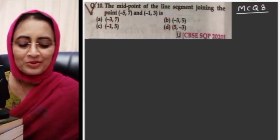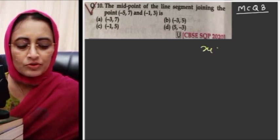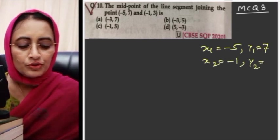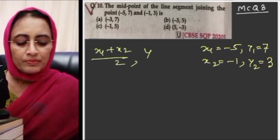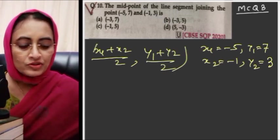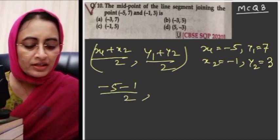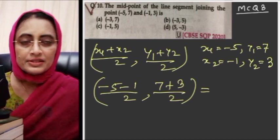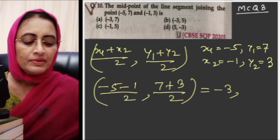MCQ number 3: The midpoint of the line segment joining the given points — this is very easy. Midpoint means add the x-coordinates and divide by 2, add the y-coordinates and divide by 2. x1=minus 5, y1=7, x2=minus 1, y2=3. Midpoint x-coordinate: (minus 5 plus minus 1) by 2 equals minus 6 by 2 equals minus 3. Y-coordinate: (7 plus 3) by 2 equals 10 by 2 equals 5.